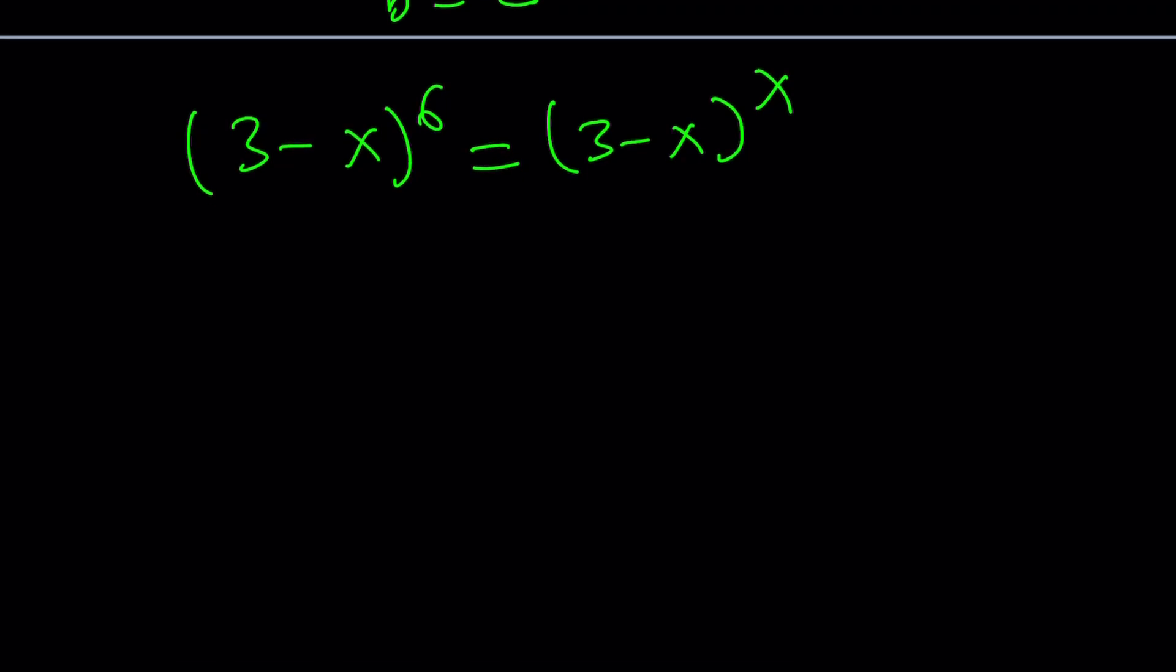First case scenario. The bottom or the base can be 0. So, 3 minus x equals 0. This implies x equals 3. Great.